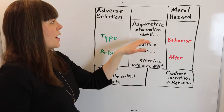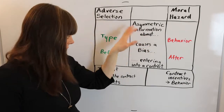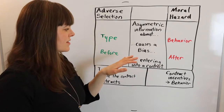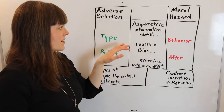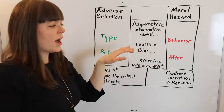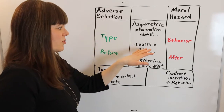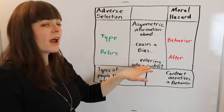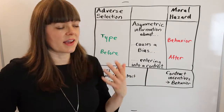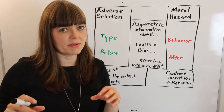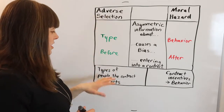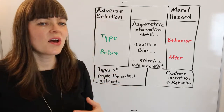The difference is: with adverse selection, the asymmetric information is about the type of person who's attracted to a particular type of contract. Definitionally, adverse selection is where asymmetric information about the type of person attracted to a contract causes a bias before entering into the contract. So when the parties sign on the dotted line, the bias has already happened because of the type of person attracted to it.